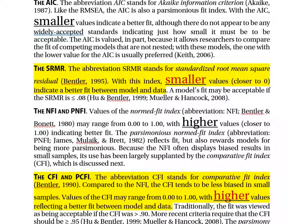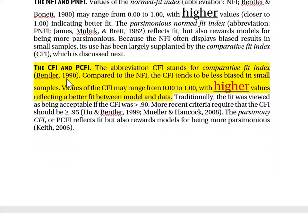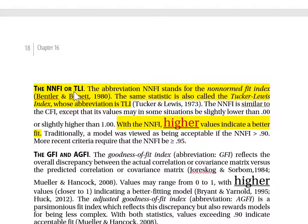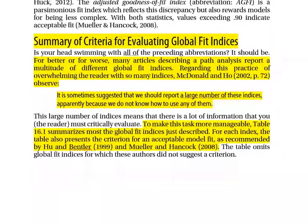The SRMR — standardized root mean square residual — also has smaller values closer to zero indicating better fit. The CFI — comparative fit index — tends to be less biased than the NFI in small samples; values range from 0 to 1.0, with higher values reflecting better fit. The NNFI, also called the TLI (Tucker-Lewis Index), likewise uses higher values to indicate a better fit.